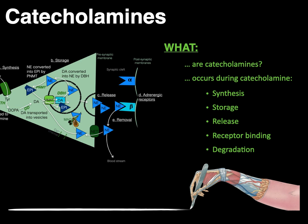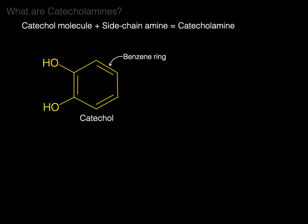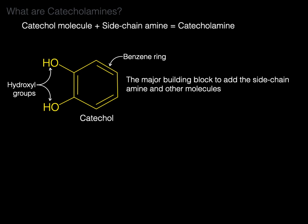Catecholamines are a catechol molecule plus a side chain amine. The catechol molecule is really just a benzene ring with two hydroxyl groups, and it serves as the major building block to add the side chain amine and other molecules.